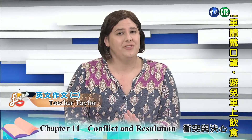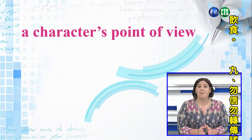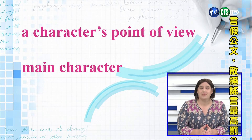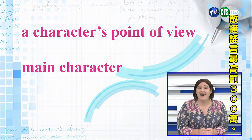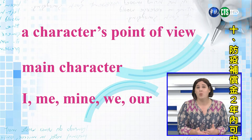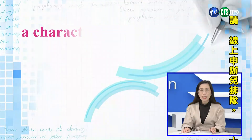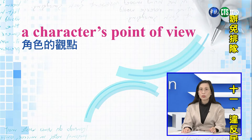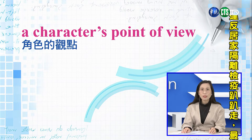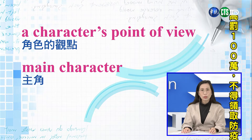First person still tells the story from a character's point of view, most often the main character. We only see and know what that character sees and knows. Sometimes called the 'I point of view,' the language used is I, me, mine, we, and our. 第一人称的视角是从角色的观点来写故事，通常是主角。我们只看到并且知道这个角色所看到的内容。有时这也称为我的观点，你所使用的字都是跟我有关的字，比如说I, me, my, we, our这些字。